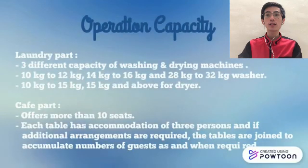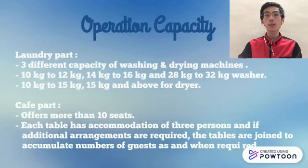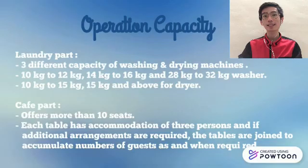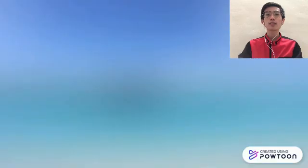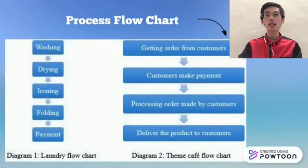In the laundry part, Happy House provides three different capacities of washing machines and drying machines. For the themed cafe, we offer more than 10 seats. Diagram one shows the laundry floor chart and diagram two shows the cafe floor chart.